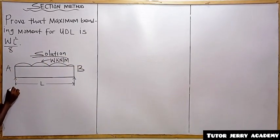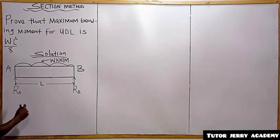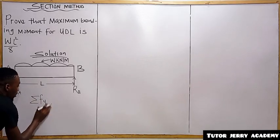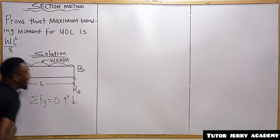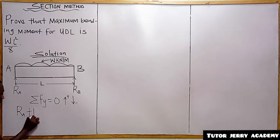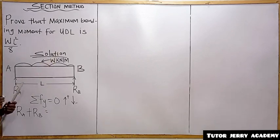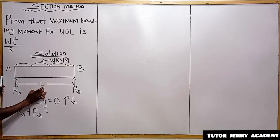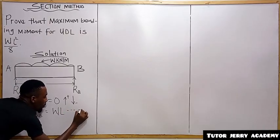Here we are going to have a reaction at A and a reaction at B. First and foremost, we calculate the sum of vertical forces equal to zero, taking upward force as positive and downward as negative. So reaction at A plus reaction at B equals W times L — since W is in kilonewtons per meter and the length is in meters, multiplying gives WL. So RA + RB = WL. This is equation number 1.